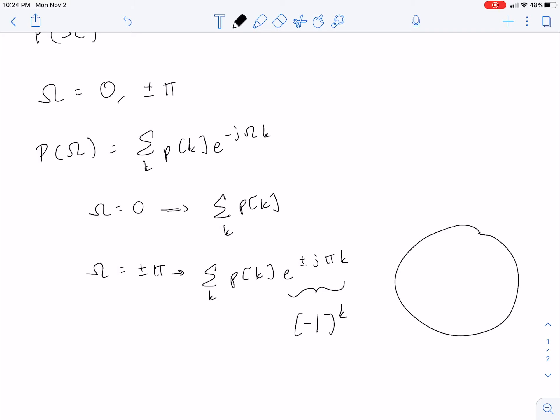You can write out the sinusoid if you want to prove this to yourself. But another way you can intuitively understand this is if I have my unit circle, I know that at an angle of zero, my signal is all real. And at an angle of plus or minus pi, my signal is also all real.